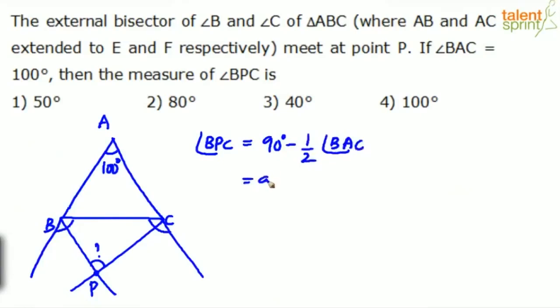Just apply that and you'll be able to get the answer. 90 minus half of angle BAC is how much? 100. So half of 100 is 50. 90 minus 50 will give you 40 degrees. 40 degrees. Option 4. Option 3 will be the answer. So very simple one. Option 3, 40 degrees. So just remember those properties.